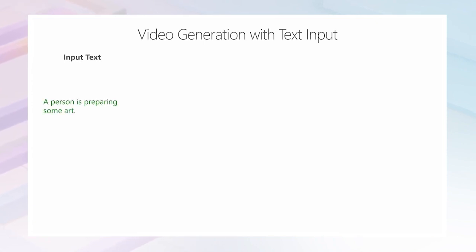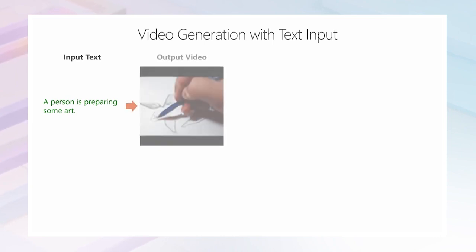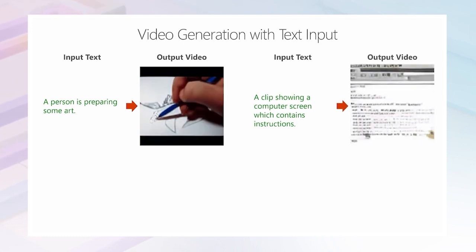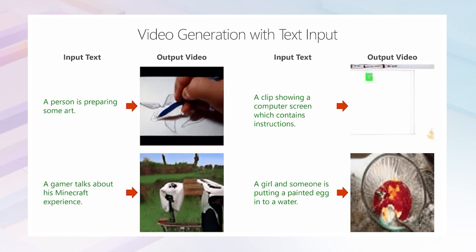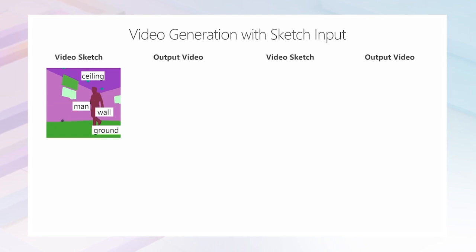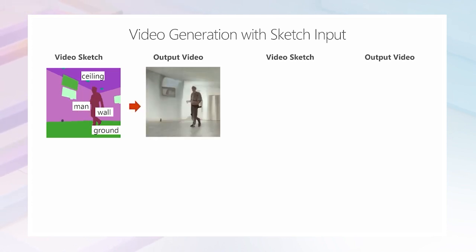Generating images is necessary, but not sufficient. Now let's talk about a more challenging task: creating videos directly from text. For example, 'a person is preparing some art' — the model generates someone drawing a flower. 'A clip showing a computer screen which contains instructions.' And more samples like Minecraft, or 'put egg into the water.' You can even generate a video just as you wish, like a director. If you have a video sketch — like a man working in a room — the generated result would be cool. Another example appears to be an outdoor scene. Two more examples with screens and skin are also shown.